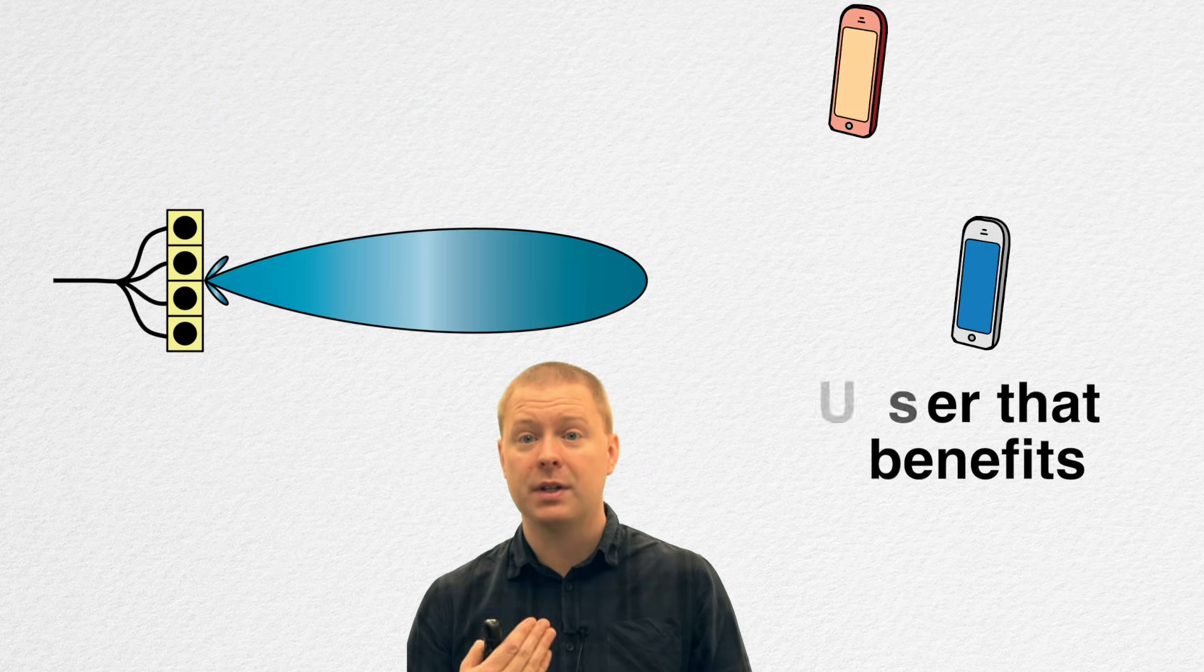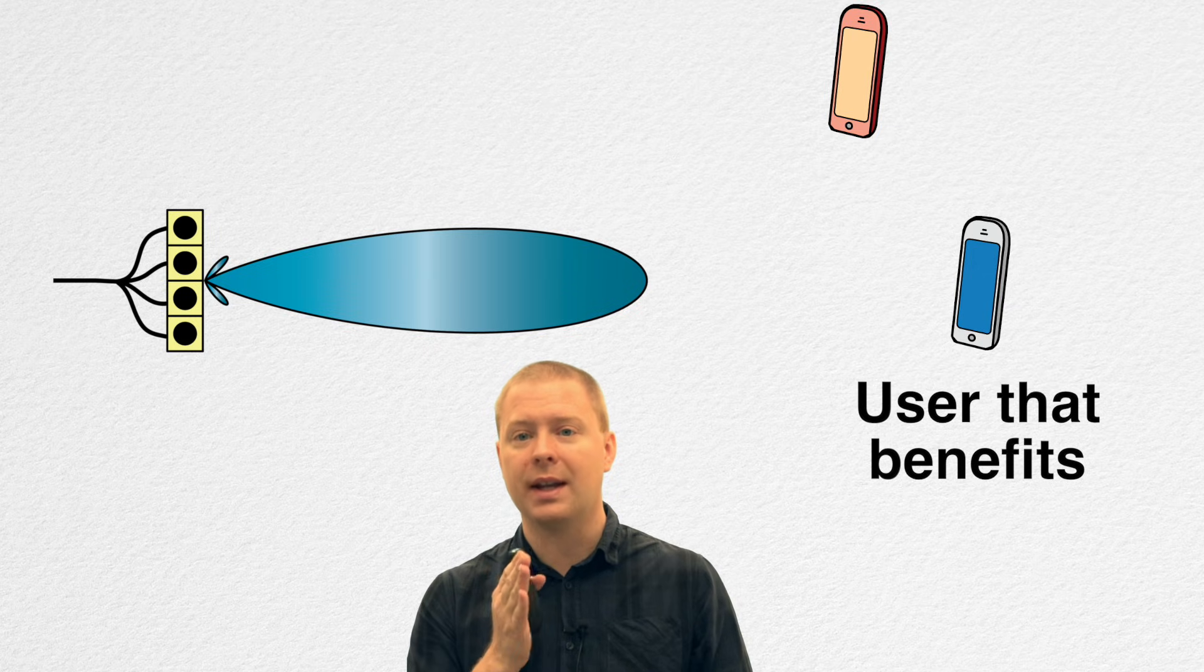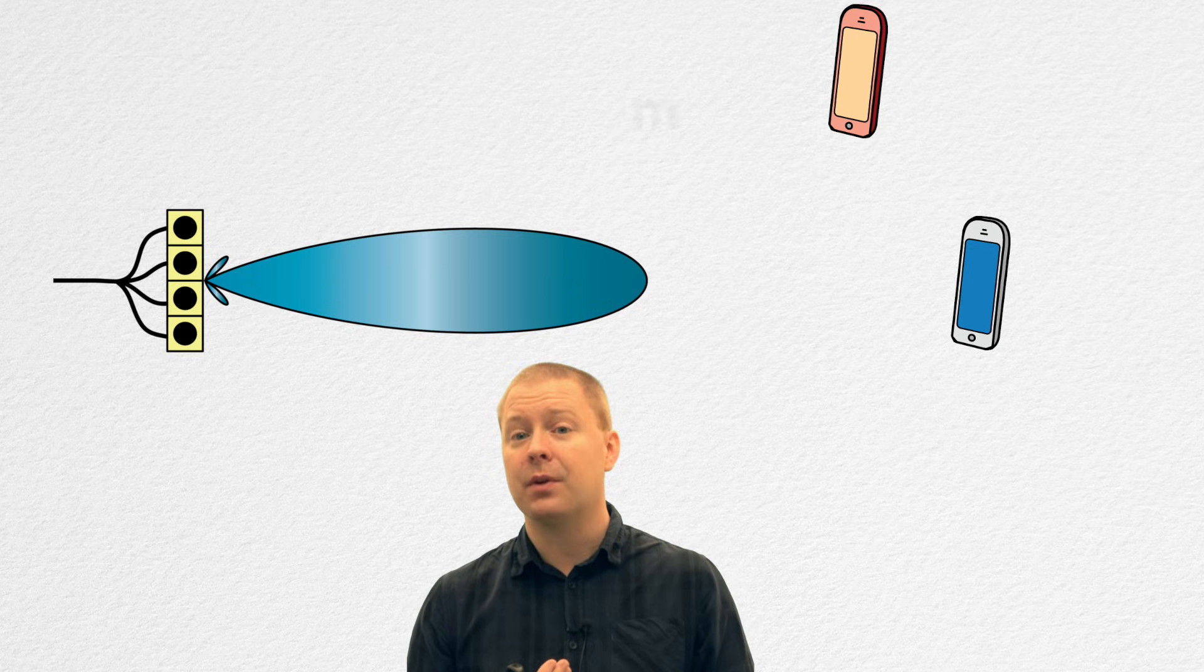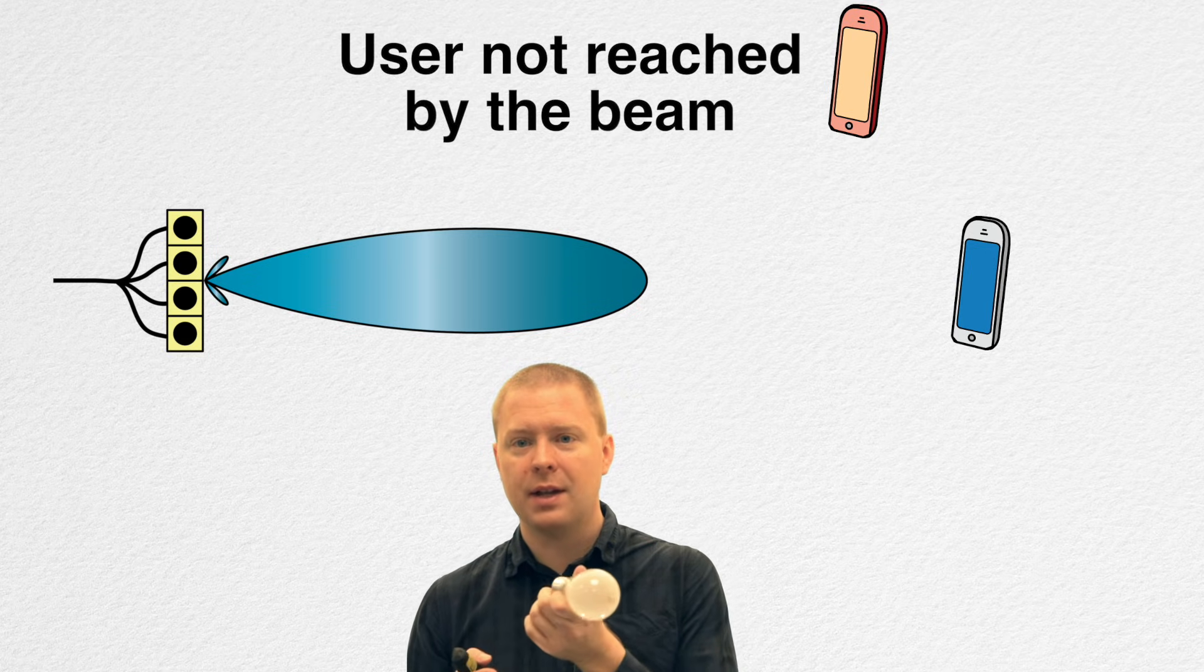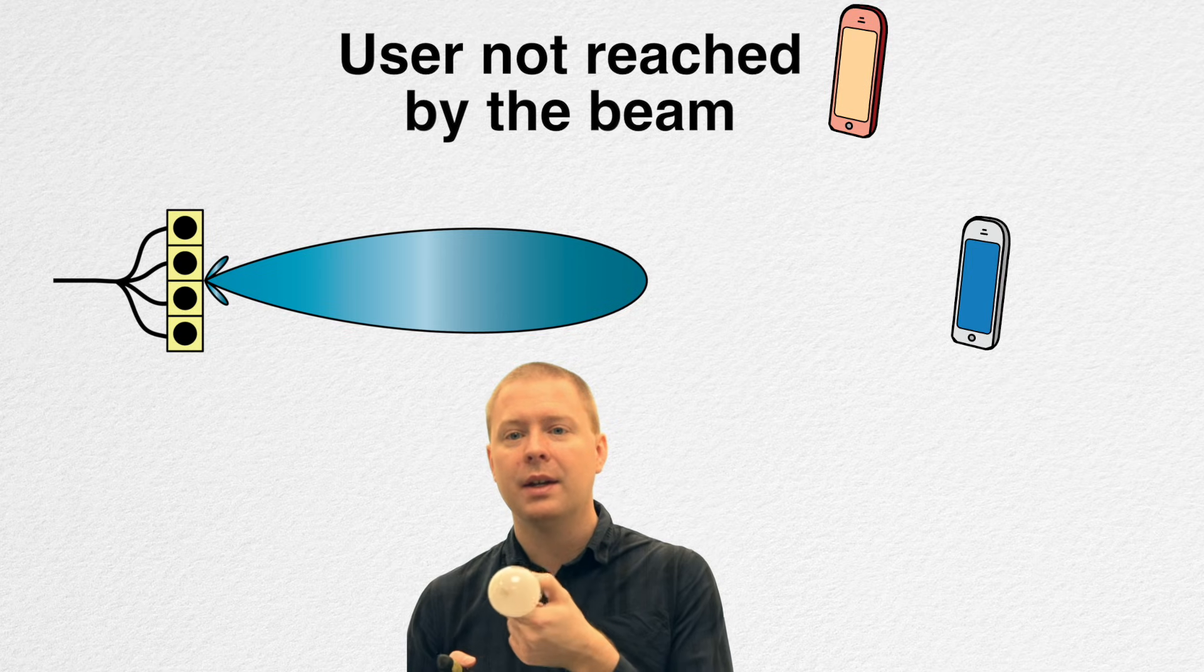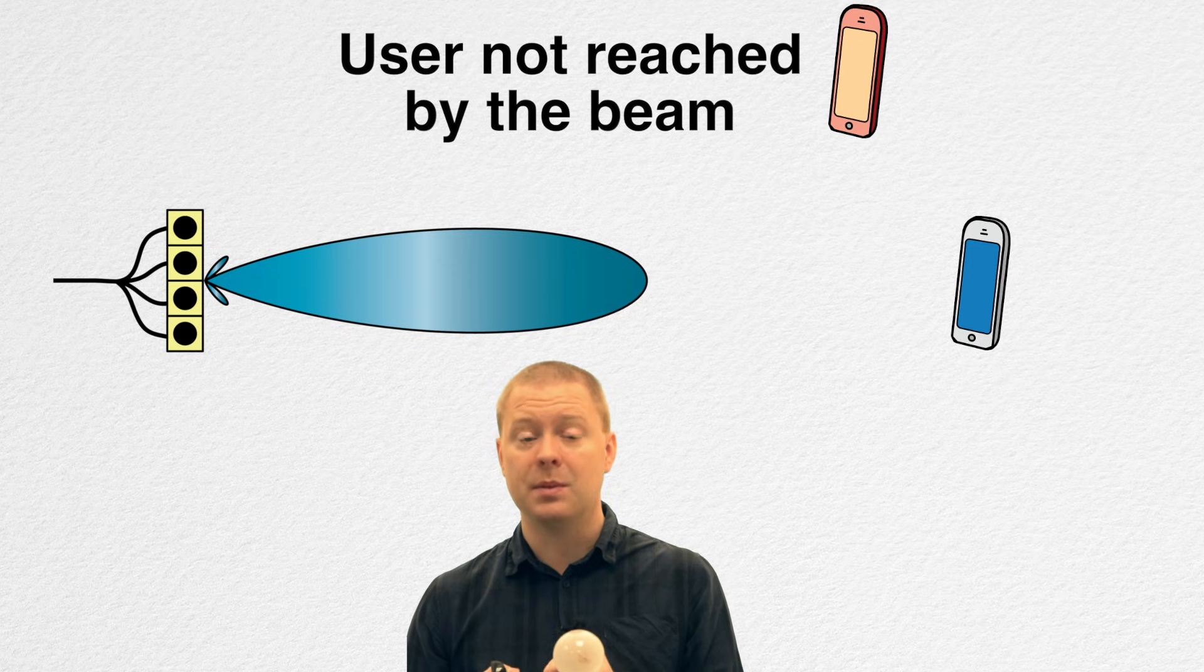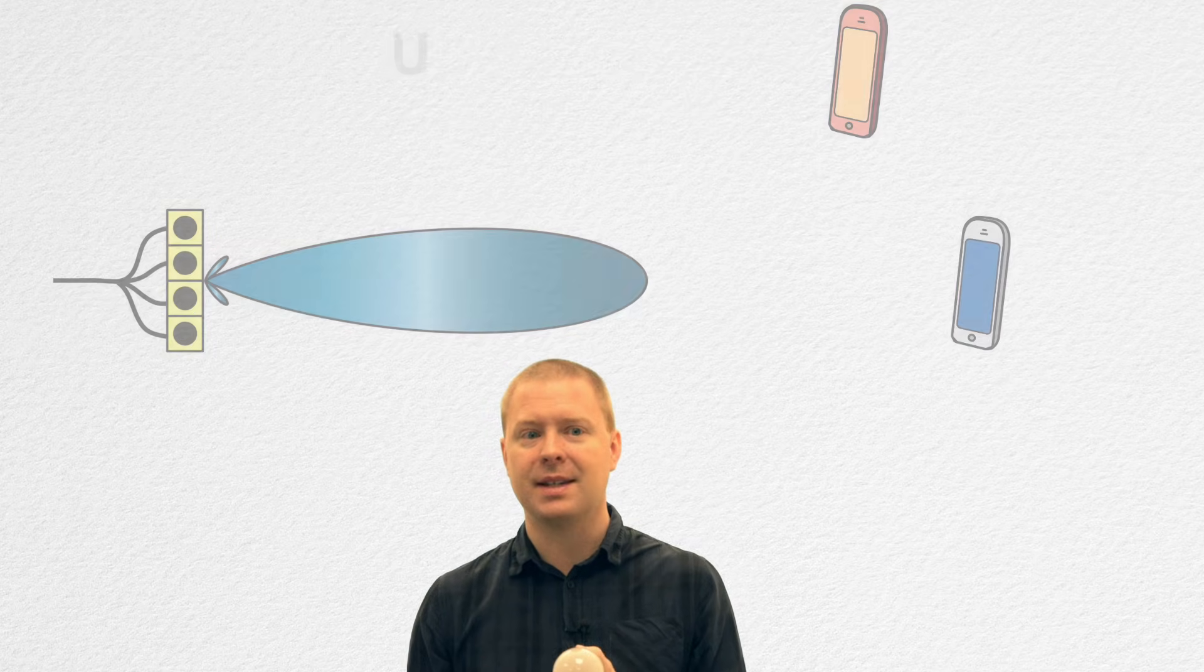The problem with making a more directive signal is that you only benefit right in front of it. If you know where the user is going to be, you can make sure you get this much stronger signal, called array gain, towards the user. But if the user is at different locations, just as you will move around the light emitted from a flashlight in order to see a large area, you need to do the same thing with this beam in order to reach another user, like the red user in this case.